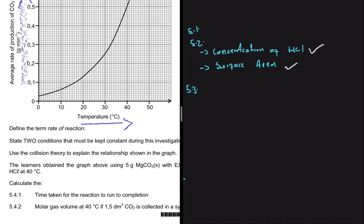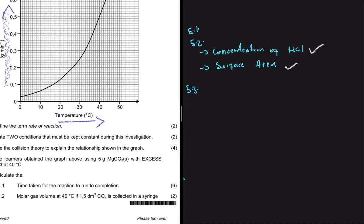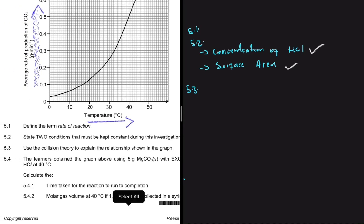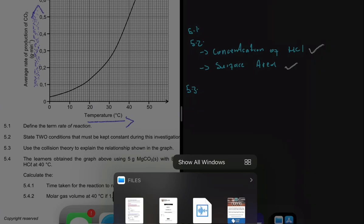According to collision theory, if you increase the temperature, the average kinetic energy of the particles will increase. Then more molecules will have a kinetic energy equal to or greater than the activation energy, leading to more successful collisions per unit time. Consequently, the rate of reaction increases.